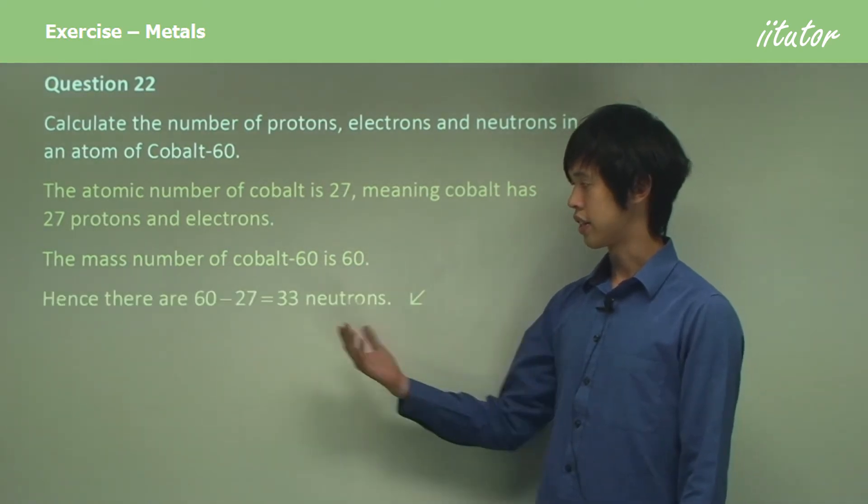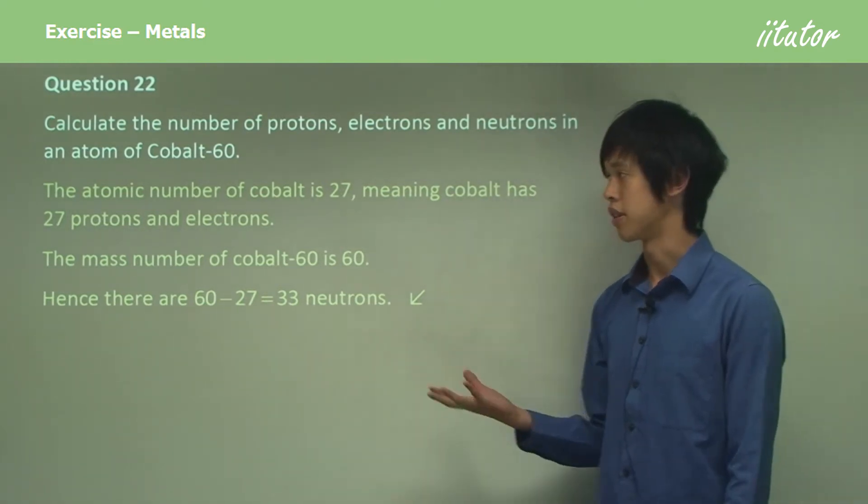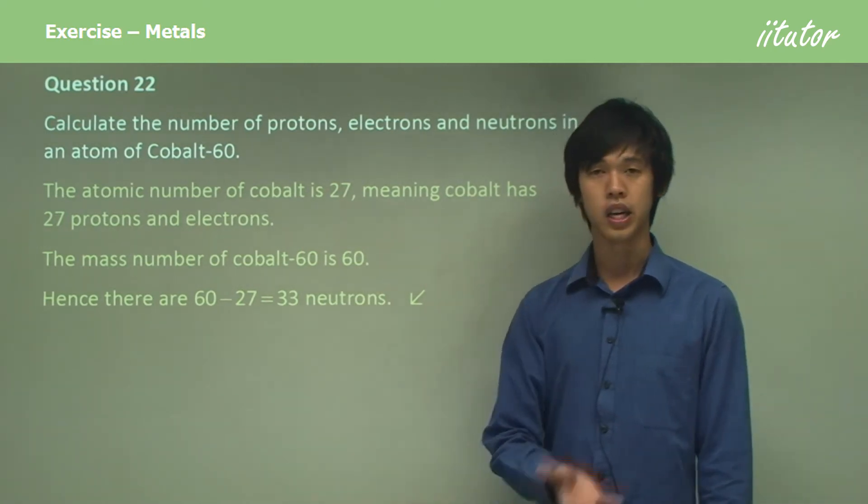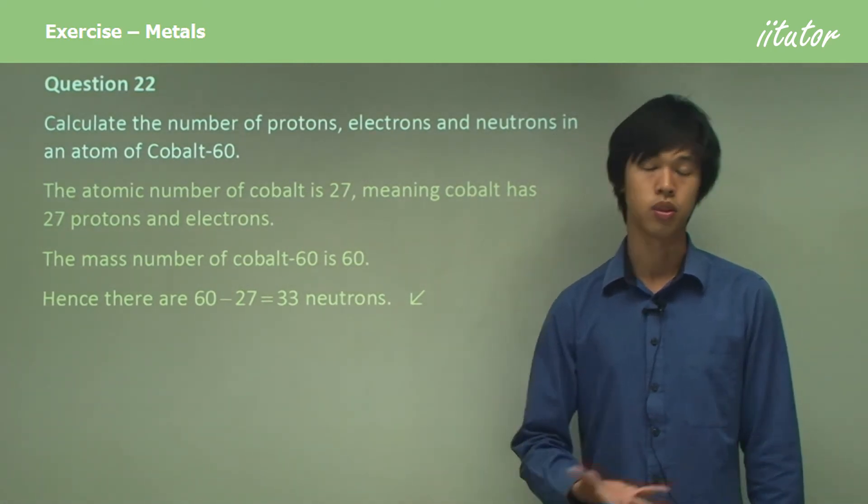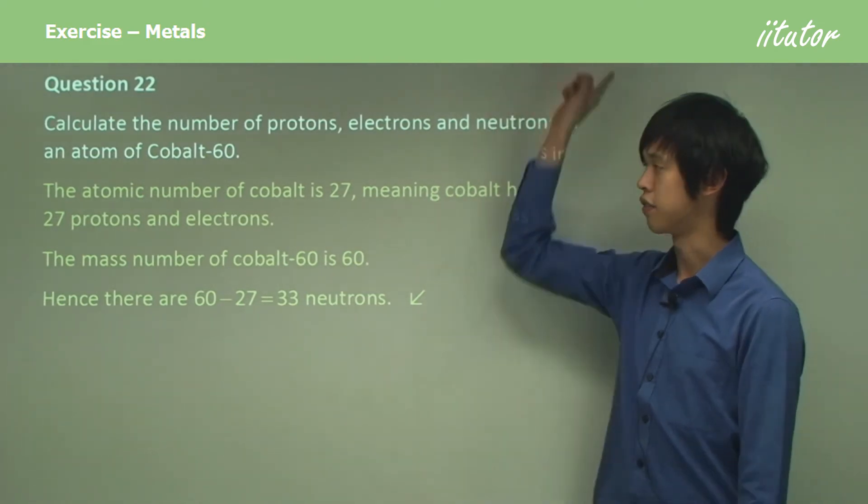Hence there are 60 minus 27, which is 33 neutrons in cobalt-60. So there are 27 protons, 27 electrons and 60 minus 27 neutrons, which is 33. We've done that, so we can tick this off too.